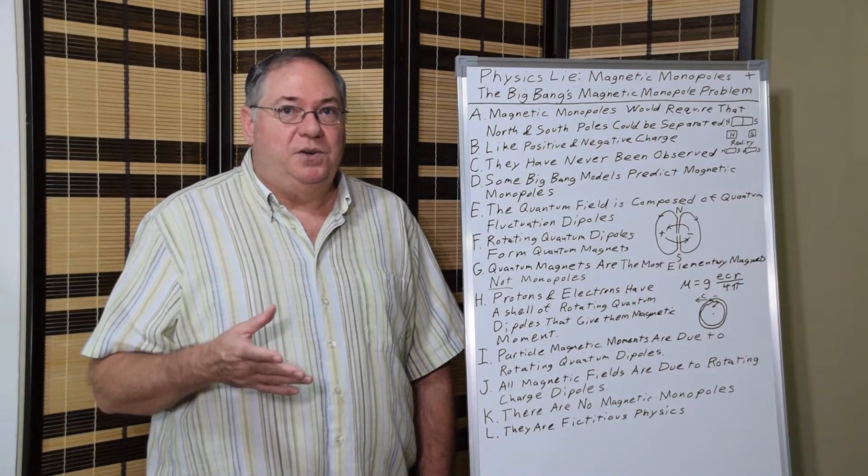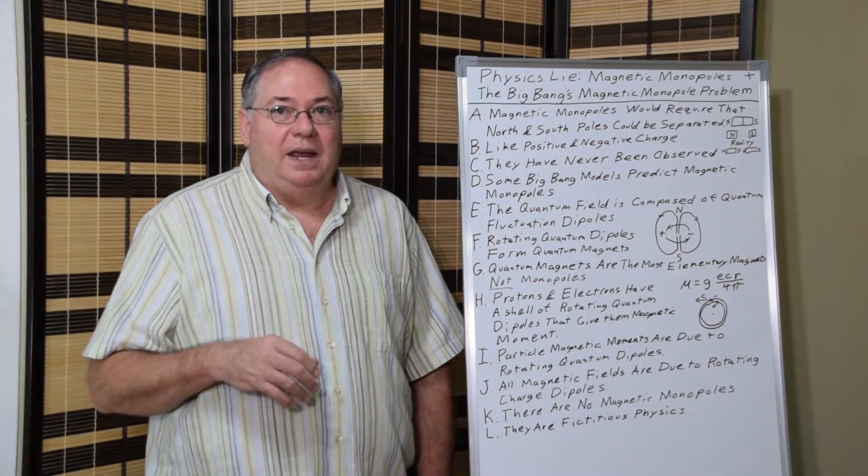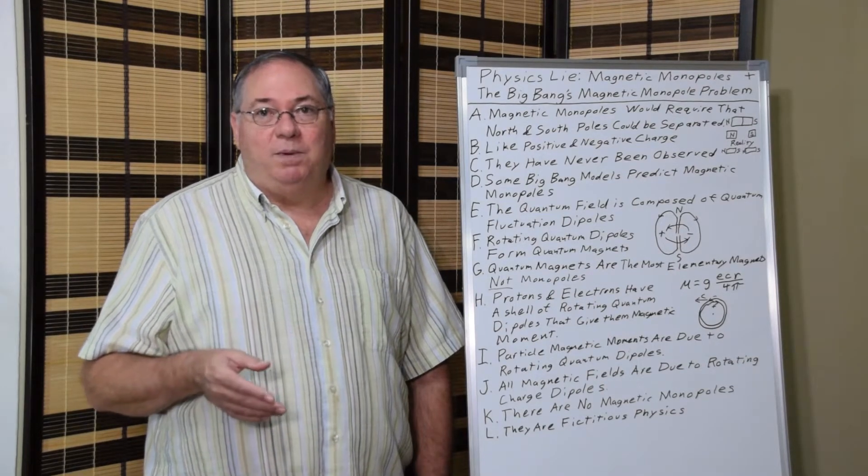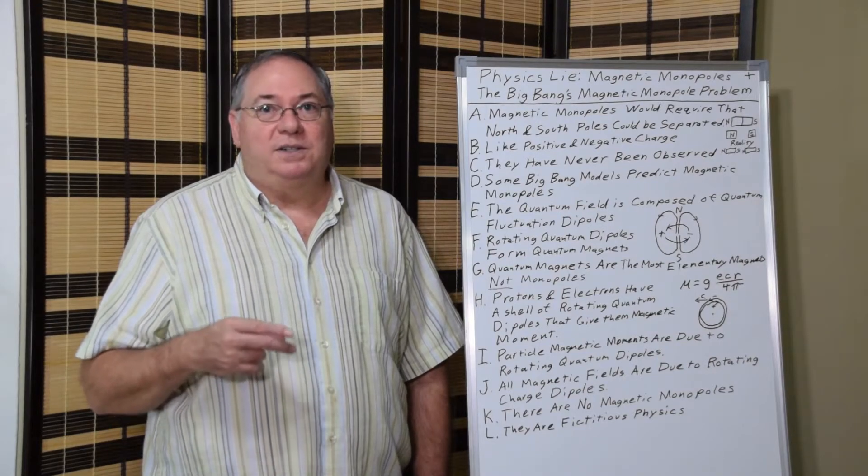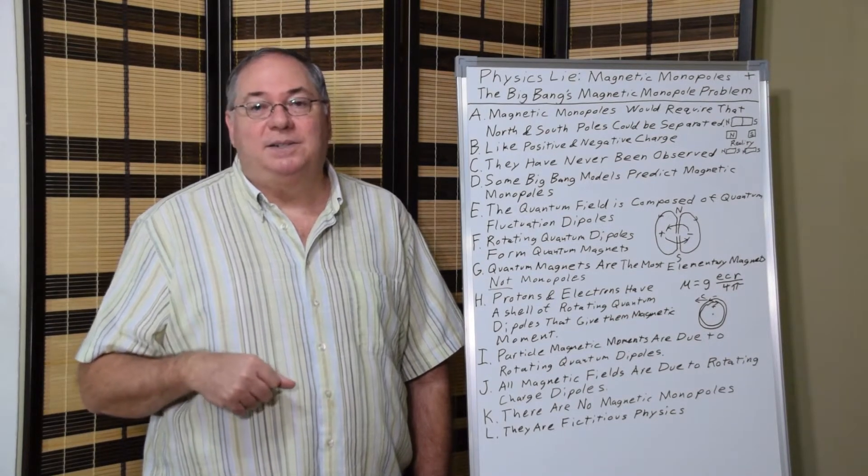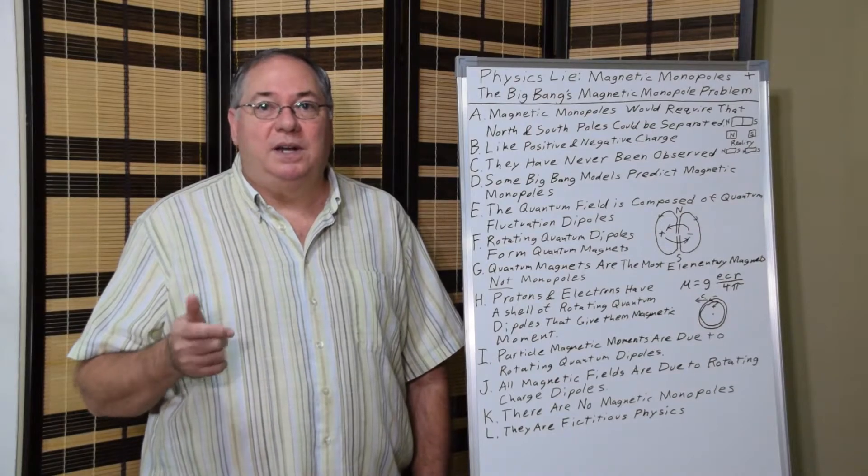And so we get a magnetic moment that can be calculated using a simple formula of a g-factor, which is close to 2, and then you have ECR divided by 4π, where ECR is the electric charge, the speed of light, and the radius. In terms of the proton, it's the charge radius.